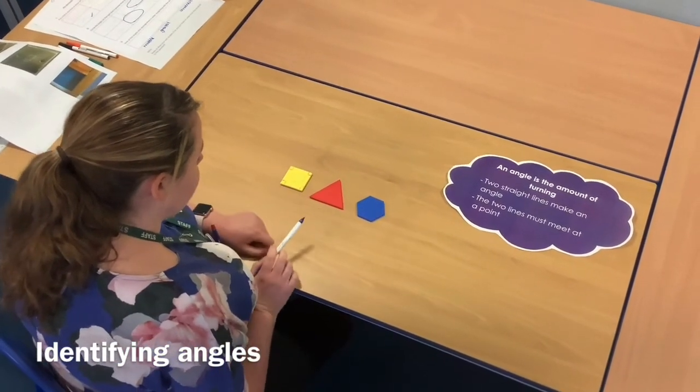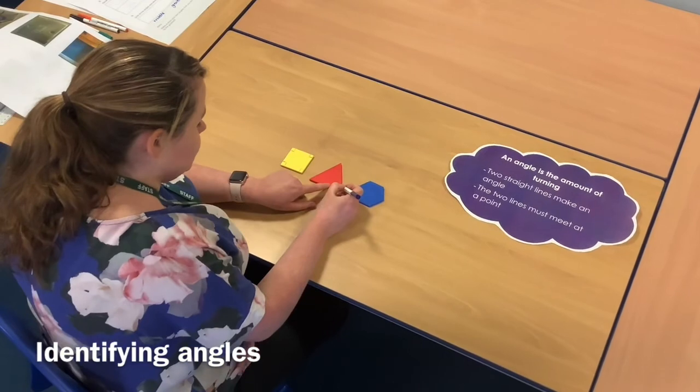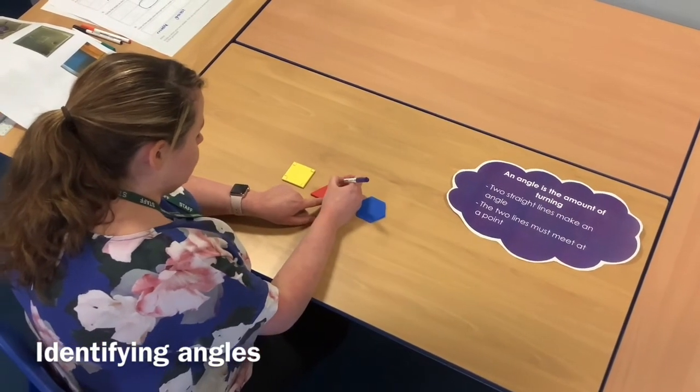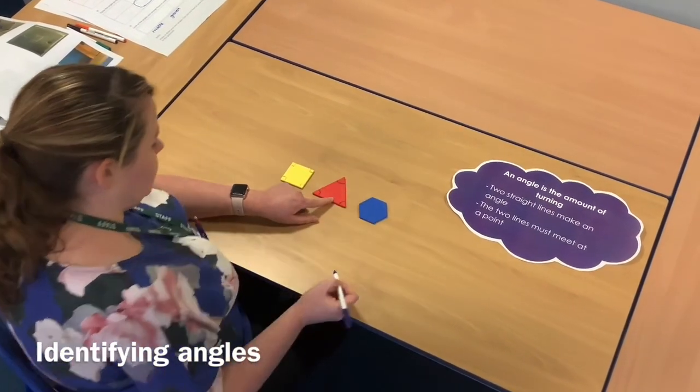On the triangle, looking at my straight lines, where do they meet at a point? I've got one, two, three angles there.